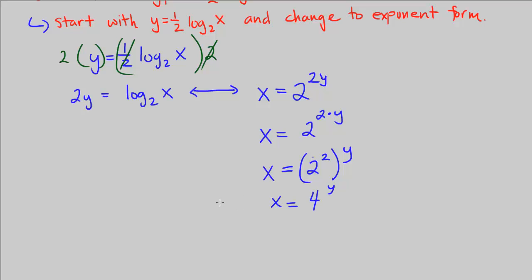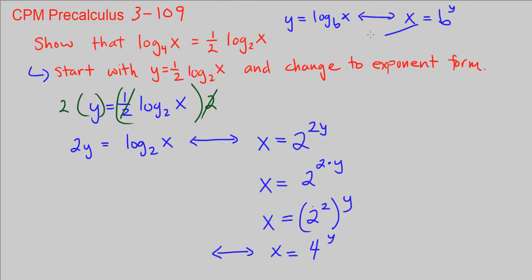Now I want to convert this back into the equivalent logarithmic form. Going from exponential to logarithmic, we take the exponent y and set it equal to log base b of x, where b is the base of the exponential. Since the base is now 4, we get y equals log base 4 of x.